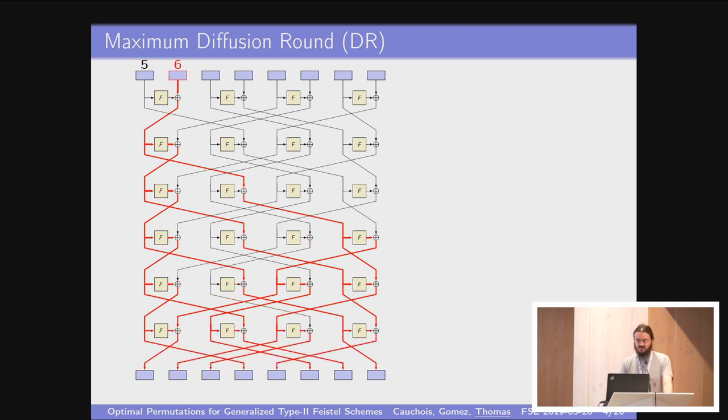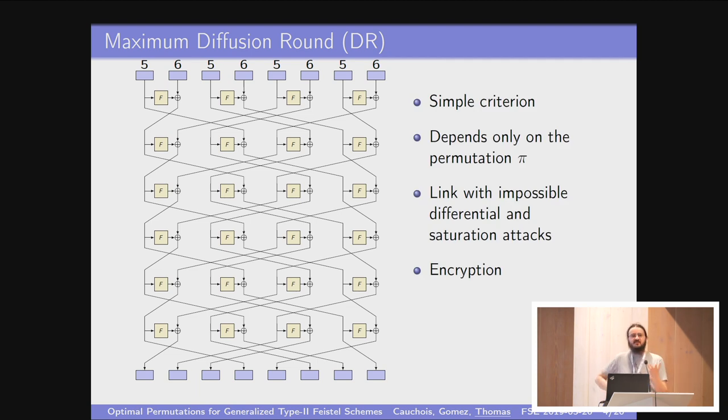So you say that the diffusion round for the first block is five. You do that for every other block. Here, we need six rounds, et cetera. The idea behind this criterion is a first sieve criterion for choosing a permutation for a Feistel network. It's first sieve because it's very easy to compute, but maybe not exactly very precise to assess the security of the cipher. Nonetheless, it's linked with many attacks which are very powerful against generalized Feistel structure, like impossible attacks and saturation attacks. Of course, it was done for encryption, but you can do the same for decryption. We say that the maximum diffusion round, or DR for short, of the permutation Pi here is six.